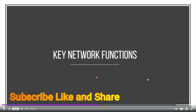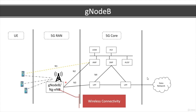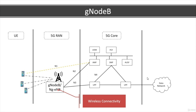Let's look at the functionality of the key network functions that make up the 5G network. Starting on the side of the radio access network, we have the 5G base station. A 5G base station that uses the new radio technology is referred to as a GNodeB. If it supports both NR and LTE, it is called an NgENB. The main function of the GNodeB is to provide wireless connectivity to the 5G devices in an efficient manner.